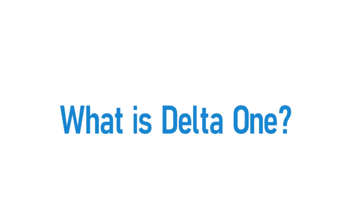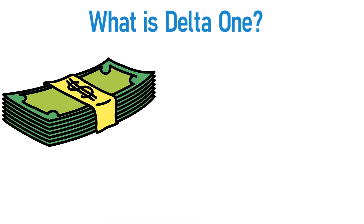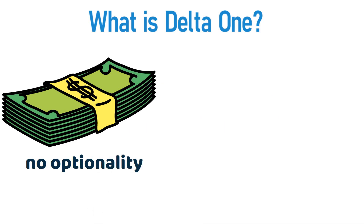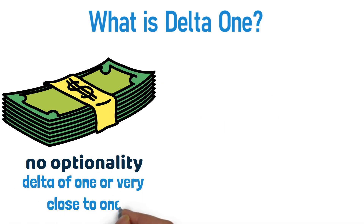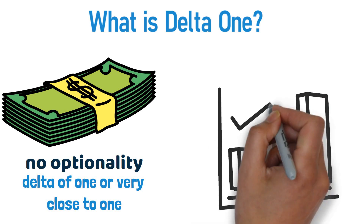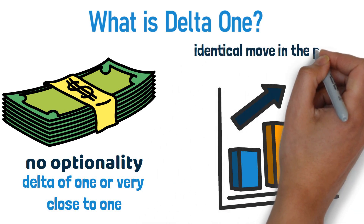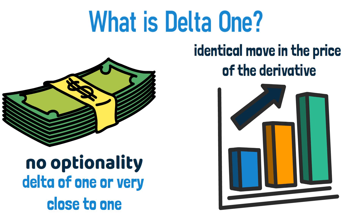What is Delta-1? Delta-1 products are financial derivatives that have no optionality and as such have a delta of 1 or very close to 1, meaning that for a given instantaneous move in the price of the underlying asset there is expected to be an identical move in the price of the derivative.